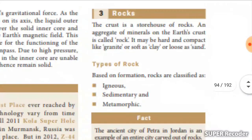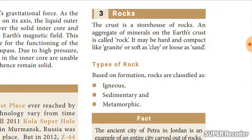Everybody knows what rocks are — they come in different sizes, colors, and weights; no two rocks are the same. The crust is the storehouse of rocks and minerals. A rock on the earth's crust may be very hard and compact like granite, or soft as clay, or loose as sand.